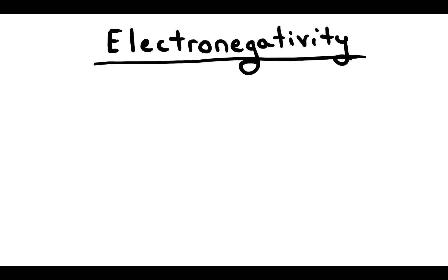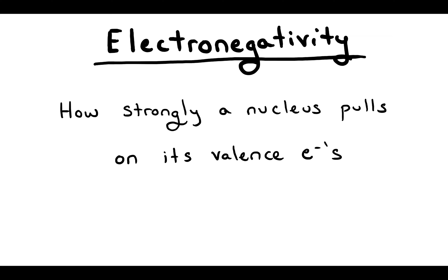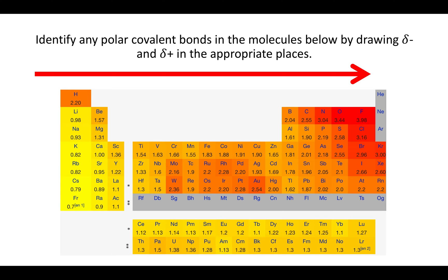To be able to do this, the concept you want to understand is electronegativity. Electronegativity is how strongly a nucleus pulls on its valence electrons. The more protons you have in a nucleus, the more positive charge there is, and the more the nucleus attracts electrons. So as you go to the right in the periodic table, you get more protons and the ability to attract valence electrons gets bigger — electronegativity increases as you go to the right.